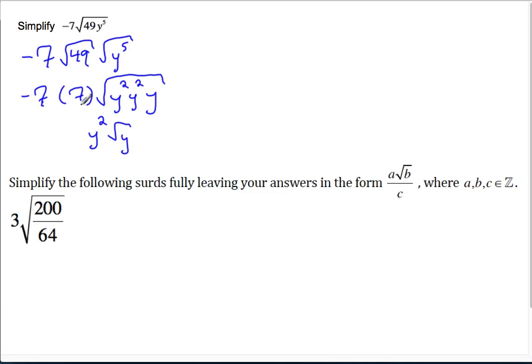A negative number times a positive number. Negative 7 times positive 7 is negative 49. So we have negative 49y squared, all outside of the third. And then underneath the third is still the y.